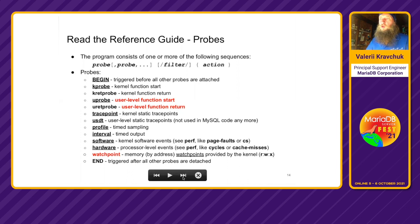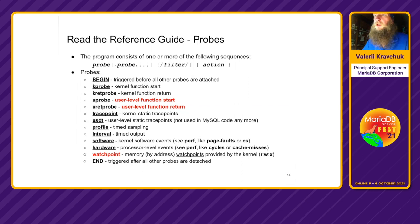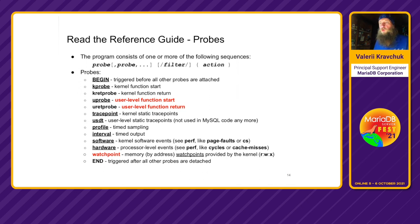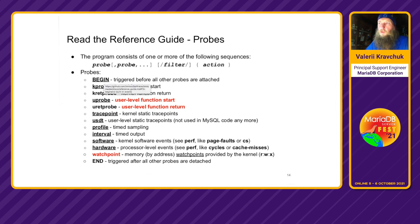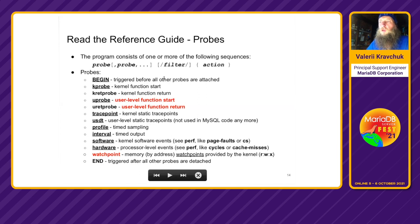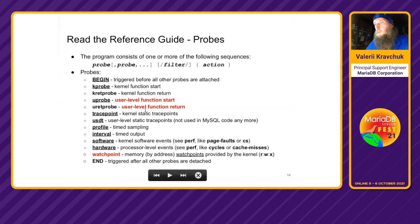How does the program look? As I told you, it's probe-filter-action triples in the general case. There is a probe — you set some action for the probe, and you can set it conditionally: if this probe is hit and this filter condition is true, then the action is executed. The program consists of one or more such sequences. Probe types include: BEGIN and END probes (like AWK), kernel probes, kernel return probes, user probes, user return probes, kernel tracepoints, user statically-defined tracepoints, profile/sampling probes, software and hardware performance counters, and watchpoints.